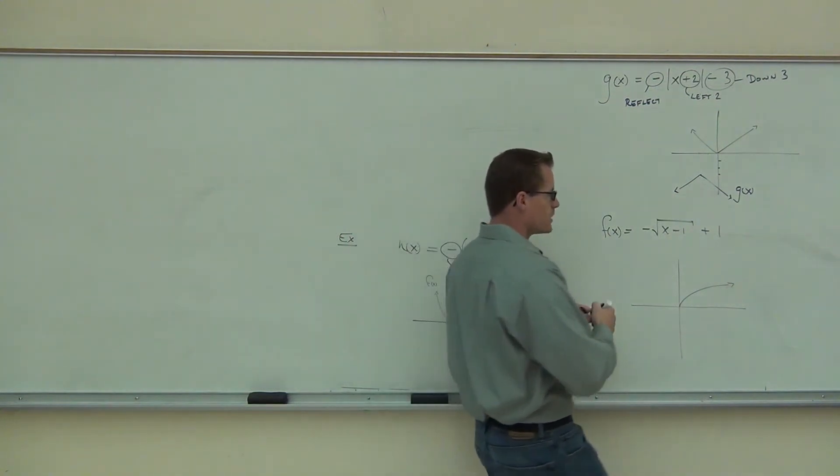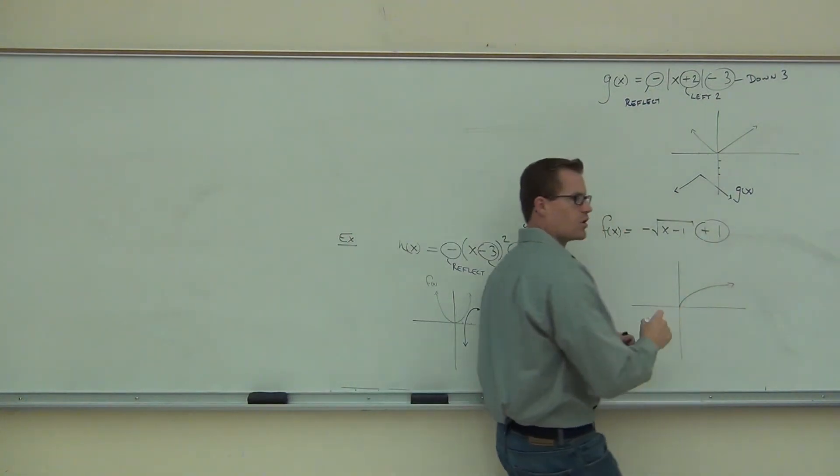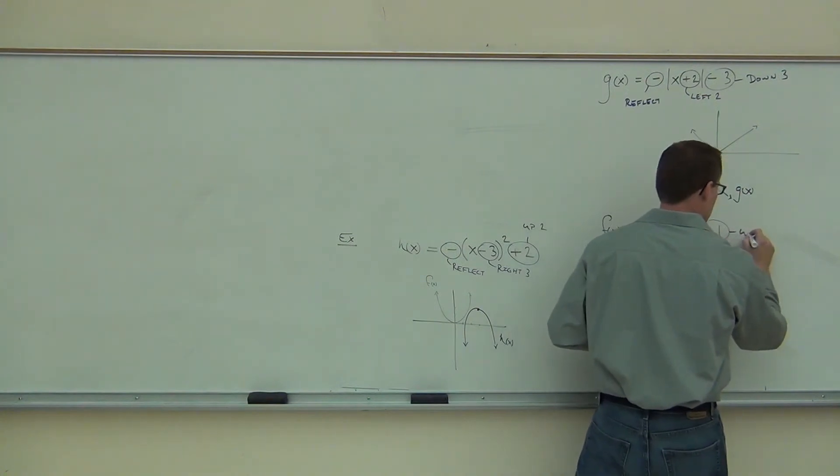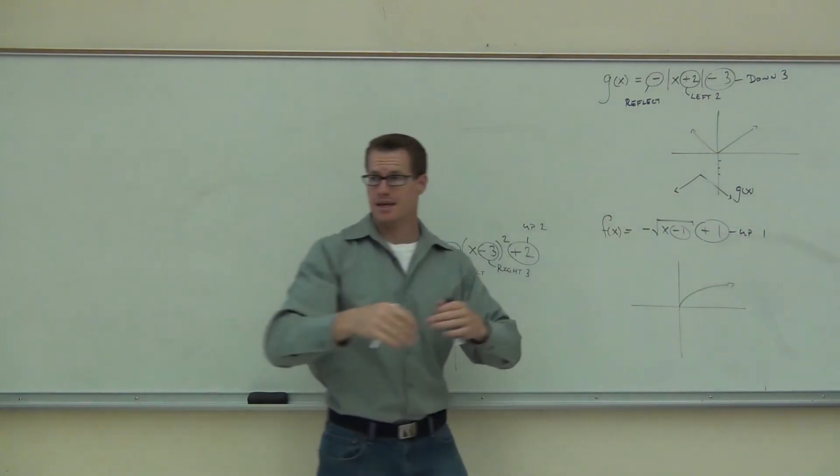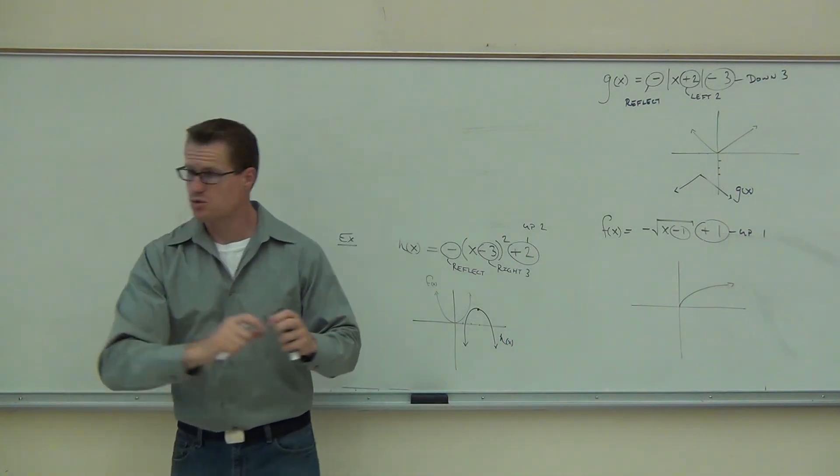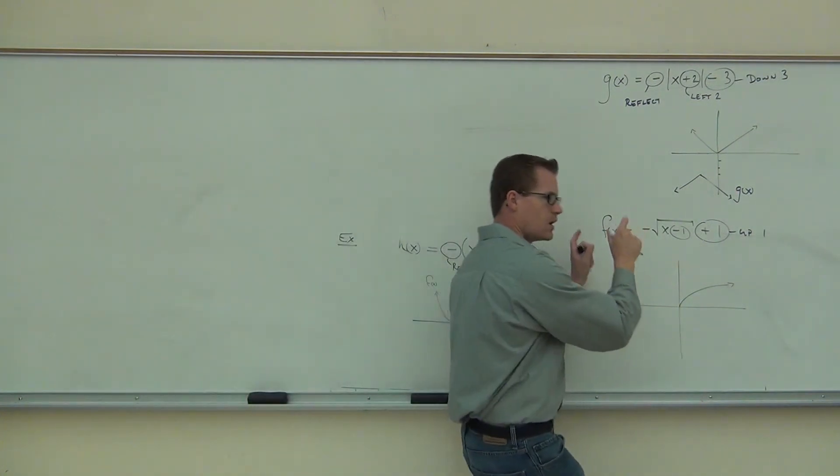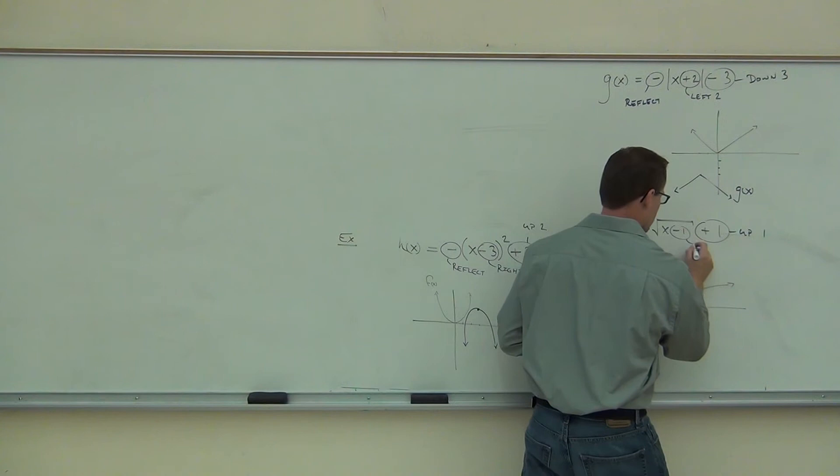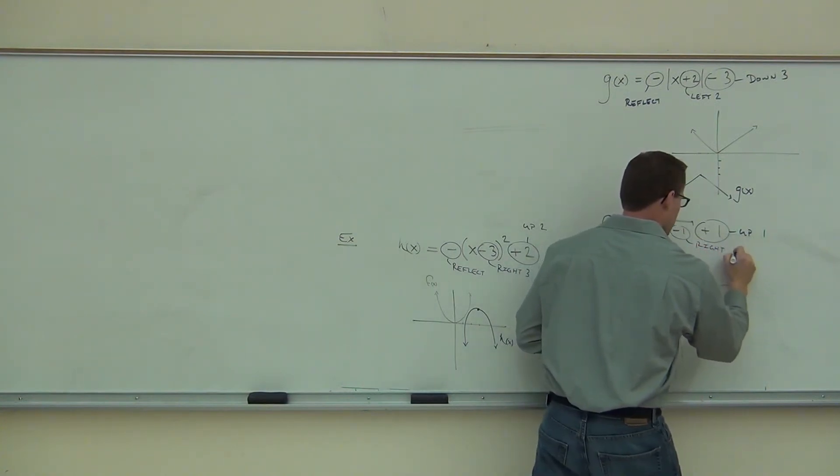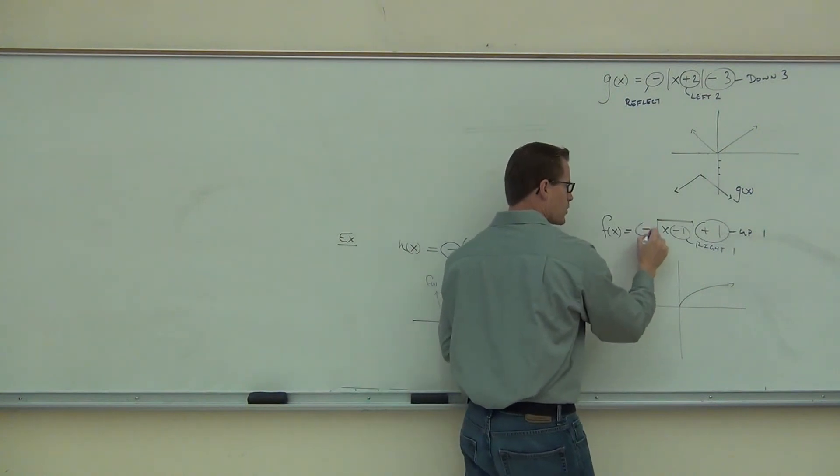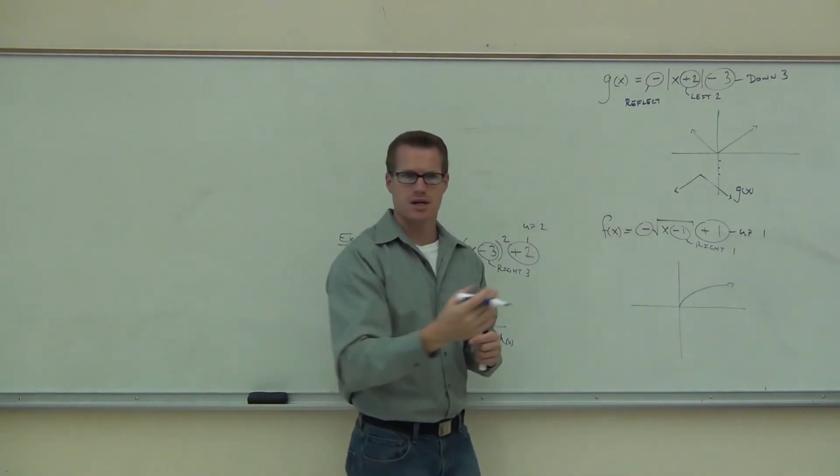So we'll identify what these things are doing. This is a plus one. That means we're going to go up one. Minus one. That happens to be within the square root. That counts as within the function. So if it's within that square root, we know we're going to be moving to the, in this case, right one. And we're going to reflect it because that negative is out front of the entire thing.